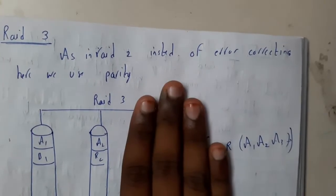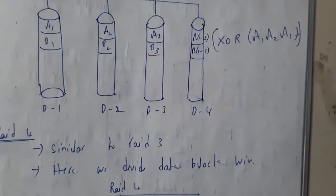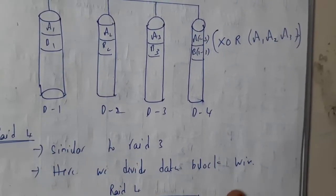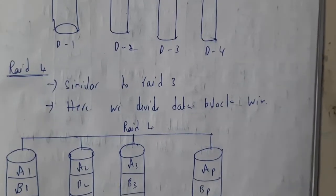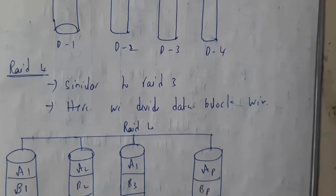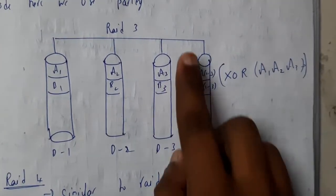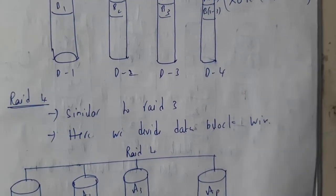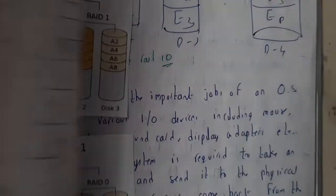The question is: what if the parity disk itself is damaged, or two things are removed? That would be an issue. That is the reason why RAID 4 came into play. Similar to RAID 3, here we divide the data at the block level. Instead of having three parity bits, we have only a single parity bit — ap, bp, cp — and with that we can handle everything.